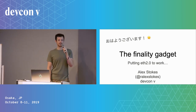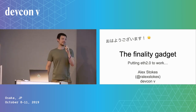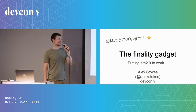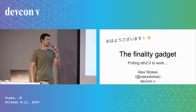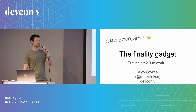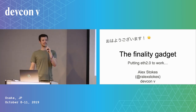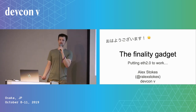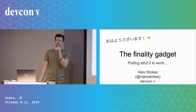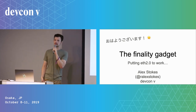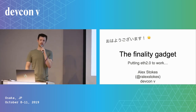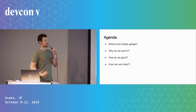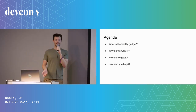The Finality Gadget is some research we've been looking into to use the beacon chain from ETH 2.0 to enhance the security of the ETH 1.0 chain. Here I will explain what it is.